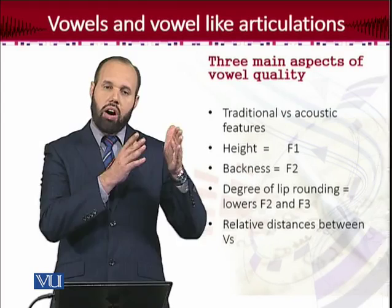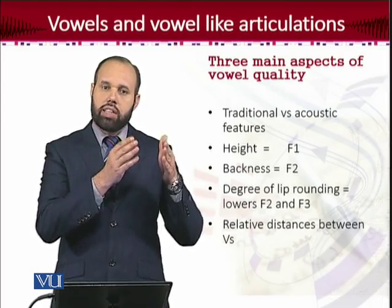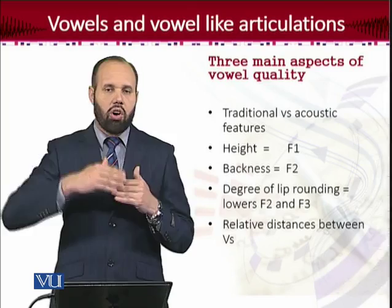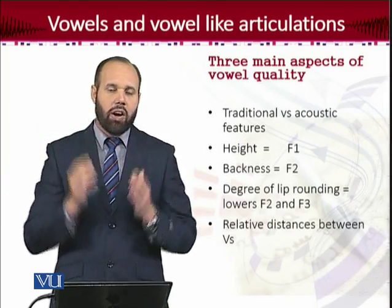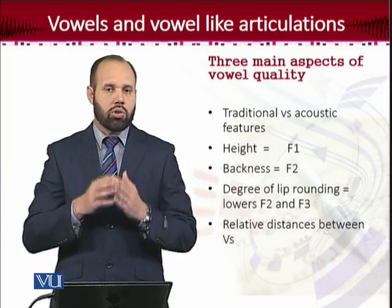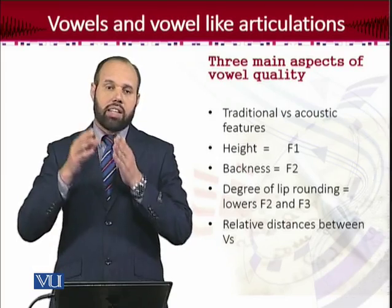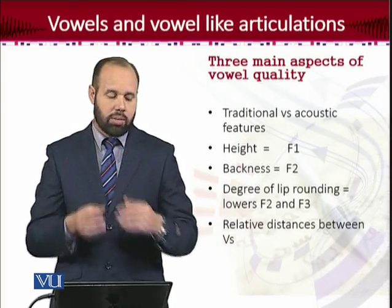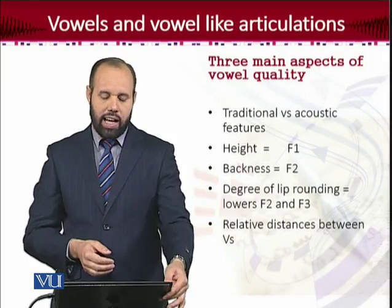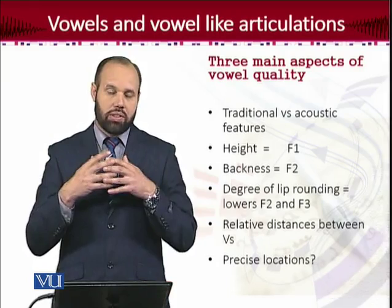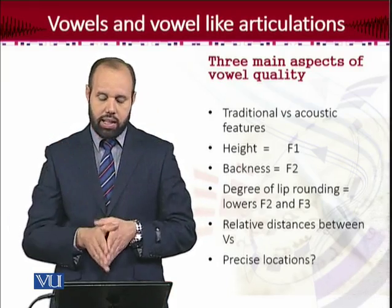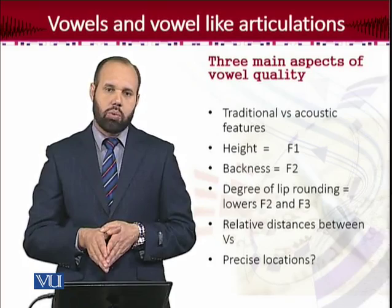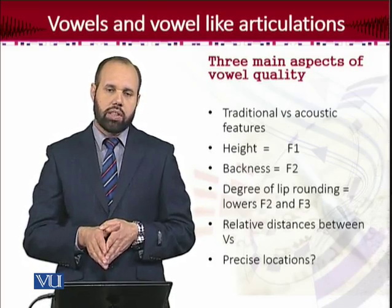The traditional description of vowels is based on the auditory abilities of listeners — when we talk about the high-low position of the tongue or the front-back part of the tongue, those features are related to auditory abilities. On the other hand, the acoustic features are based on the articulatory manner. Interestingly, there is quite a great connection found between the traditional methodology and the acoustic experimental methodology. Now talking about the location precisely through which the sounds are produced — that's an important discussion, and we will continue this in our next session.